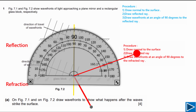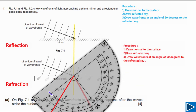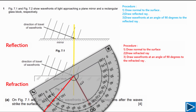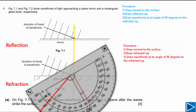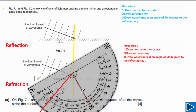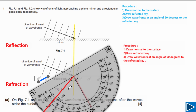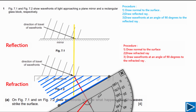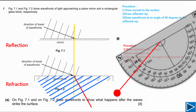For step three, draw the wave fronts at 90 degrees to the refracted ray. Align the protractor with the refracted ray and draw the first wave front. Note that the distance between these refracted wave fronts must be shorter than the distance between the incident wave fronts, because the wave has slowed down in the denser medium. Draw a second wave front at the same shorter spacing. Finally, draw an arrow on the refracted ray to show its direction.